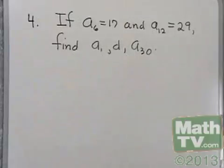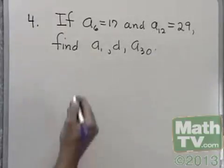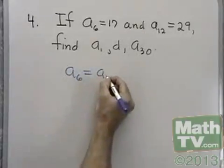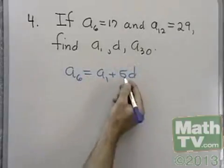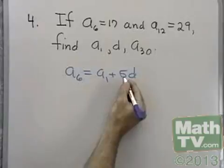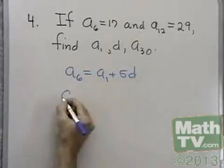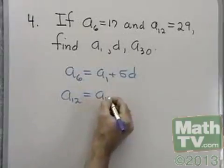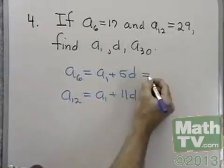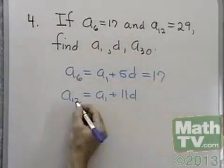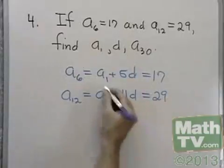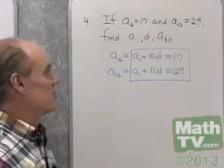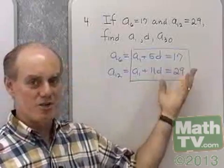Let's go to another problem where we're given a couple of terms and asked for other information. Problem number 4: a sub 6 is equal to 17 and a sub 12 is equal to 29. Can we find a sub 1, d, and a sub 30? Well, a sub 6 is a1 plus 5 times d — that's n minus 1, where n equals 6. And a sub 12 equals a1 plus 11 times d. We know a sub 6 is 17 and a sub 12 is 29.